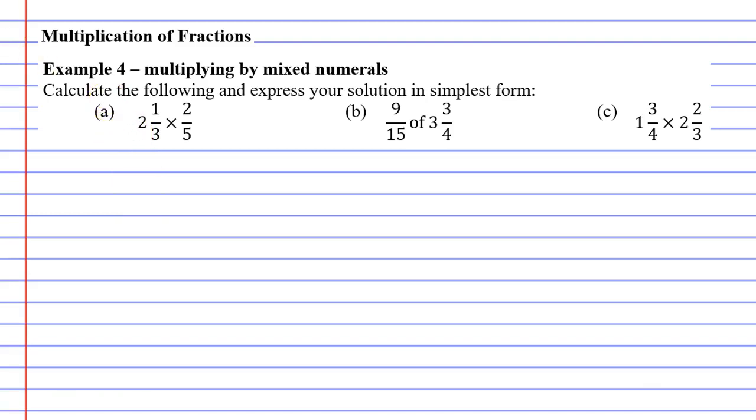Whenever you have a mixed numeral you have to turn it to an improper fraction first. So remembering that we multiply and then add. So we're going to go 3 times 2 which is 6 and 6 plus 1 which is 7. This gives us our numerator of 7.